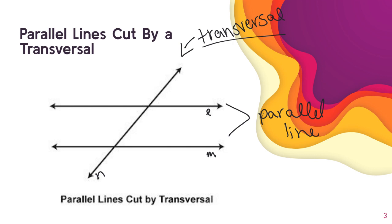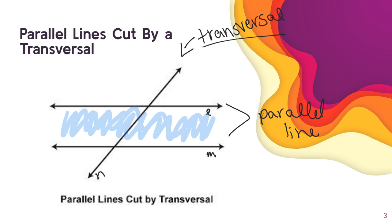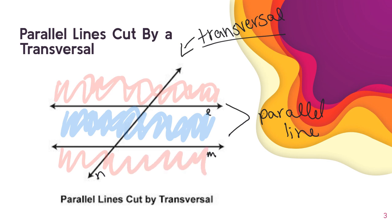If we're talking about the interior, that would be the part that is inside of our parallel lines. If you hear the word exterior, that would be the space outside of our parallel lines — so that would be on the top or on the bottom. So we have the exterior on top and bottom, and on the inside of our parallel lines would be the interior. That's going to help us know our interior and exterior alternate angles.